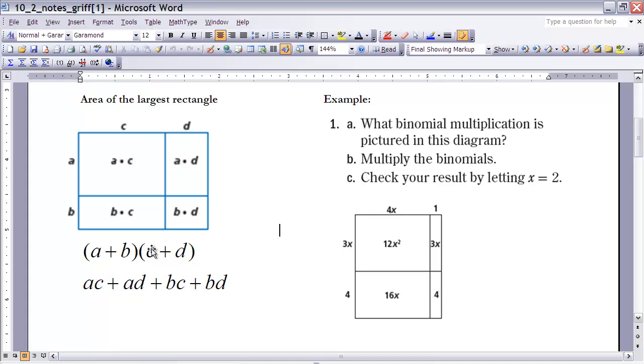So if I want to multiply these two things out, I can do it by looking at the area of each one of these rectangles. The area of this rectangle here would be A times C, this one over here would be A times D, down here B times C, and then finally this last rectangle over here would be B times D. So what that's telling me is that if I multiply these two sums together, it's the same as the sum of the area of these four rectangles, which I have listed below.